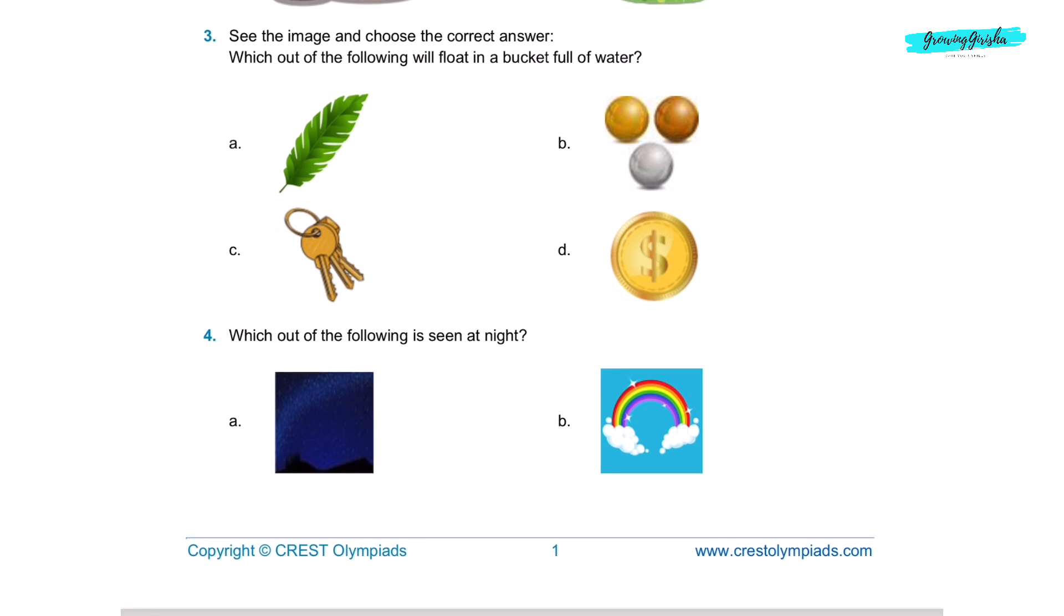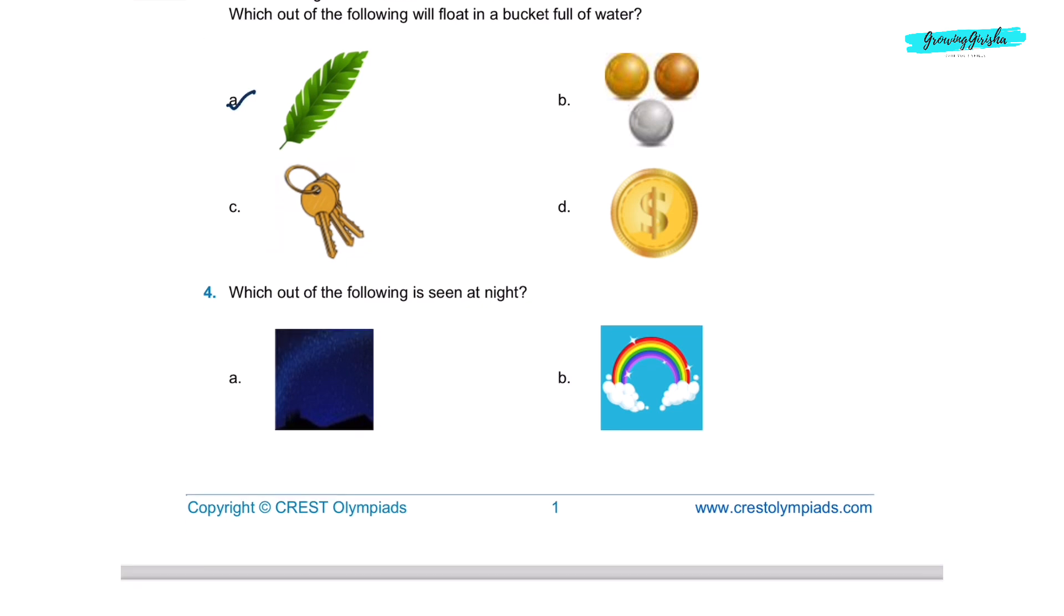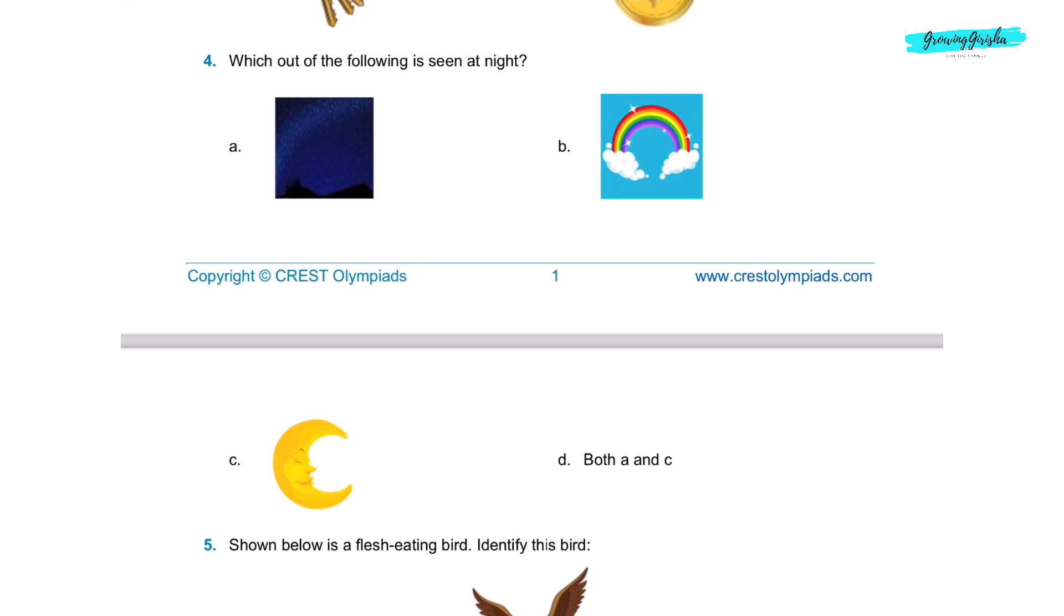Question 3. See the image and choose the correct answer. Which out of the following will float in a bucket full of water? Option A, a leaf. Question 4. Which out of the following is seen at night? Option D, both A and C. A is the stars and C is the moon.